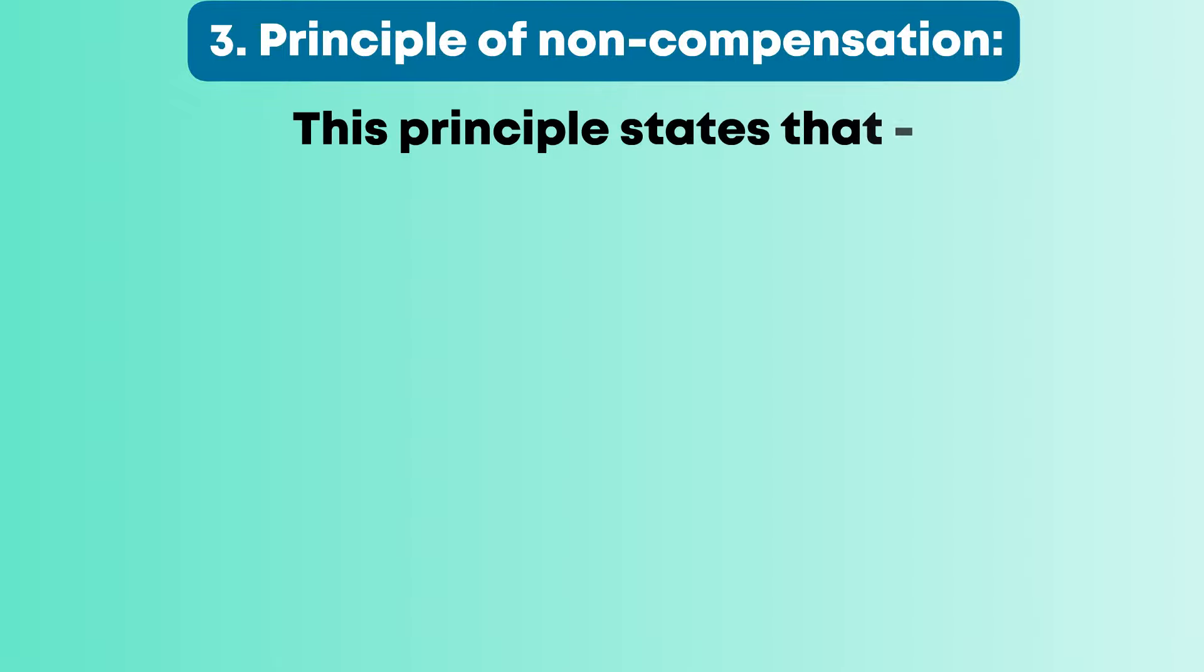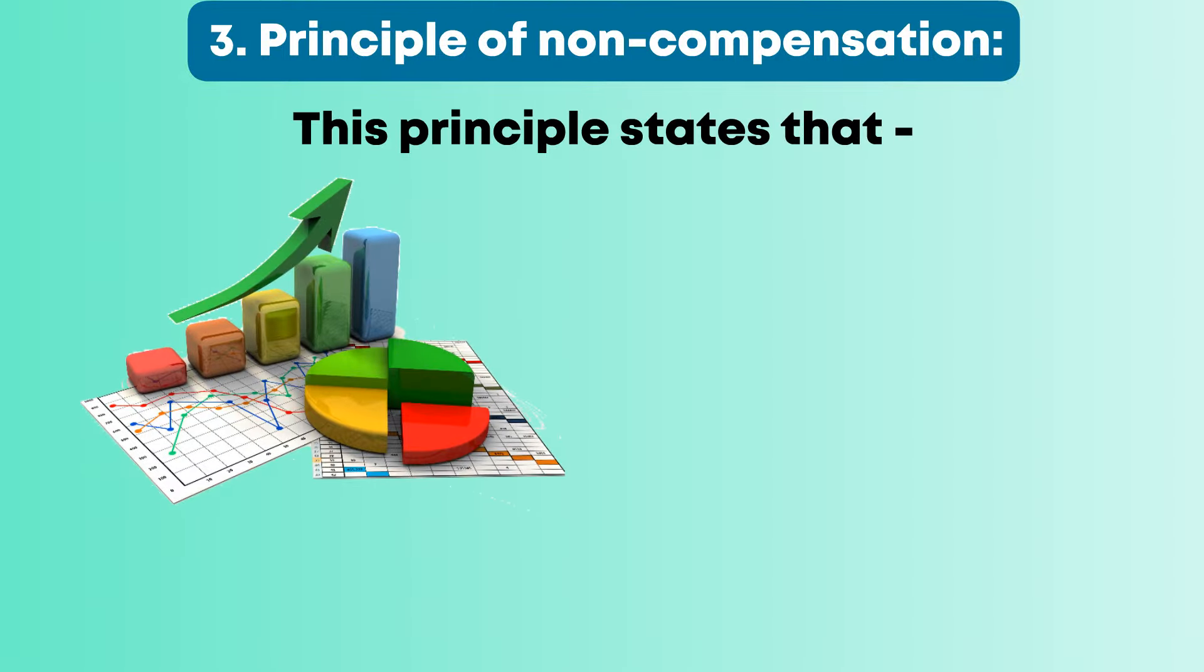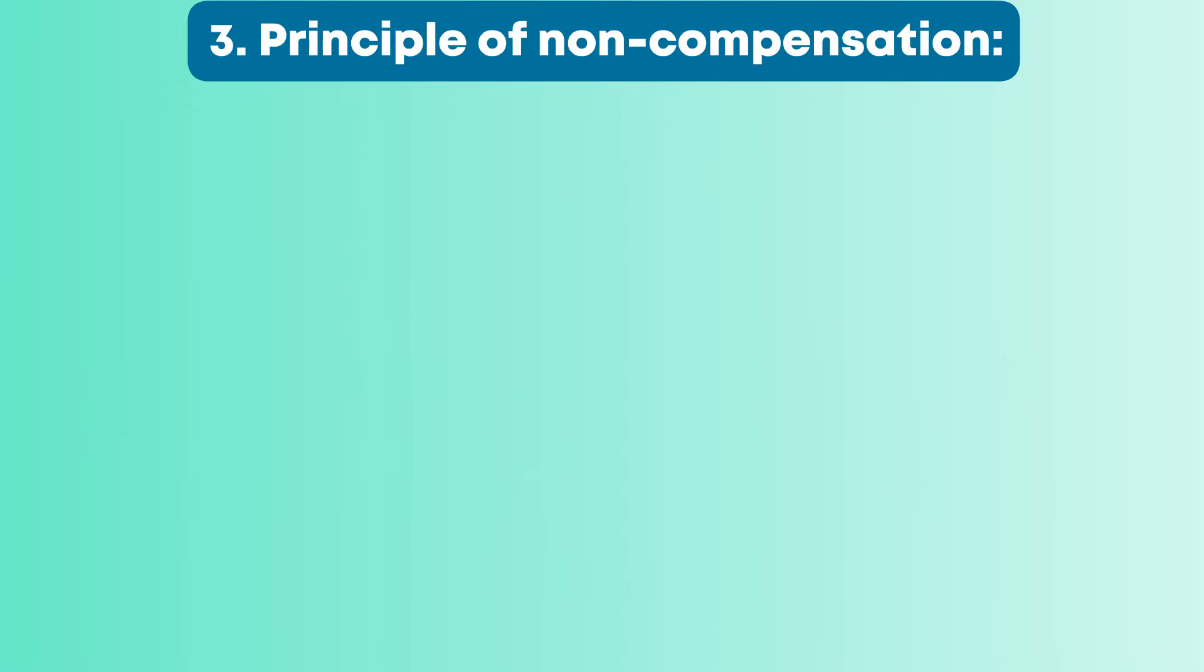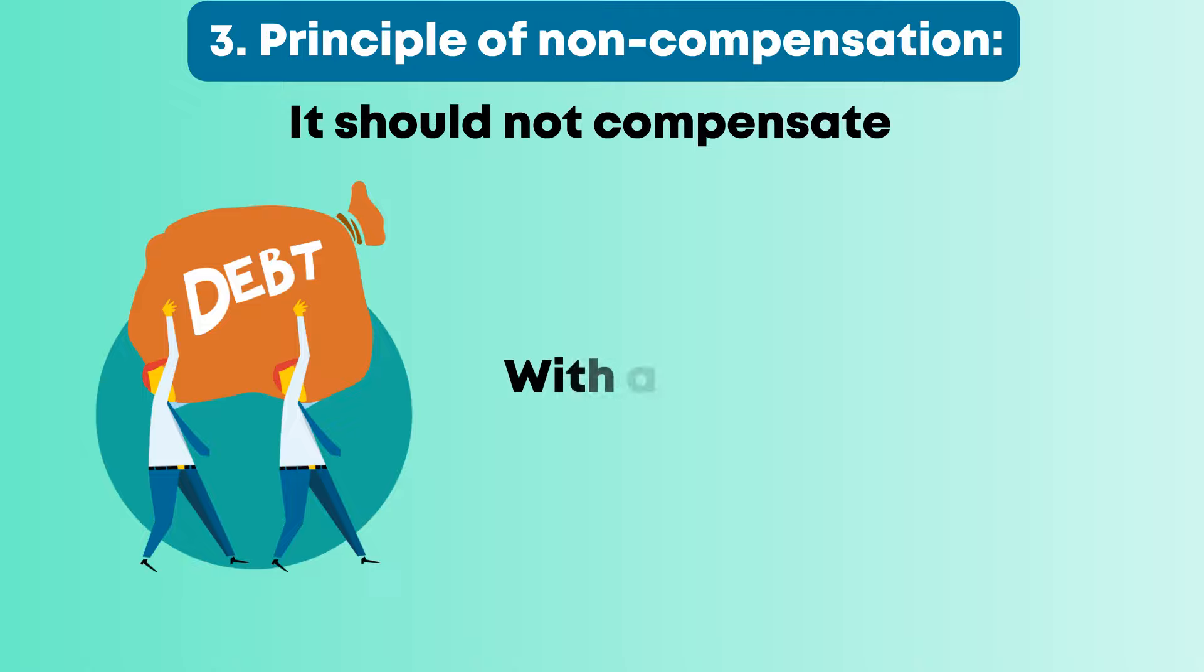3. Principle of Non-Compensation. This principle states that all aspects of an organization's performance, whether positive or negative, are to be reported. In other words, it should not compensate a debt with an asset.